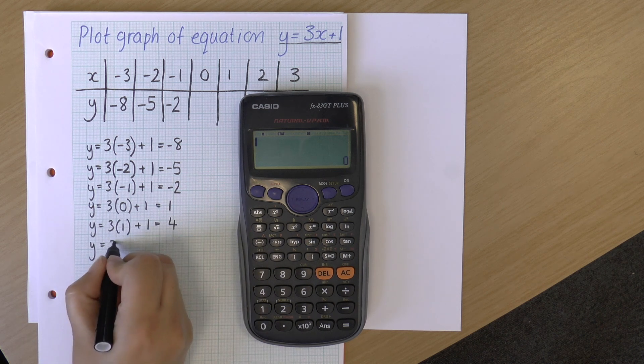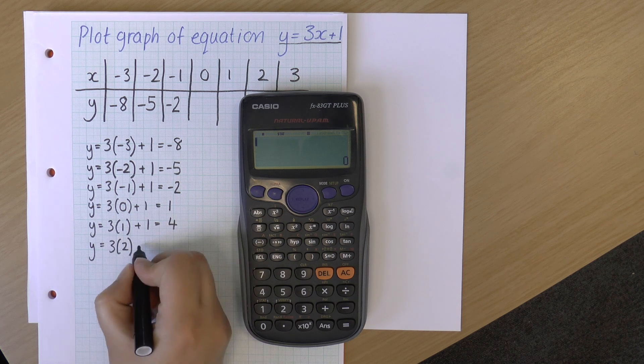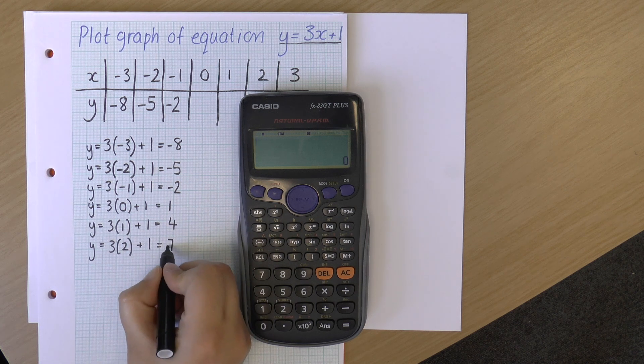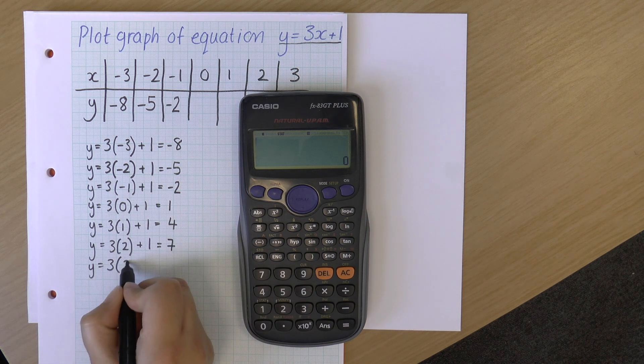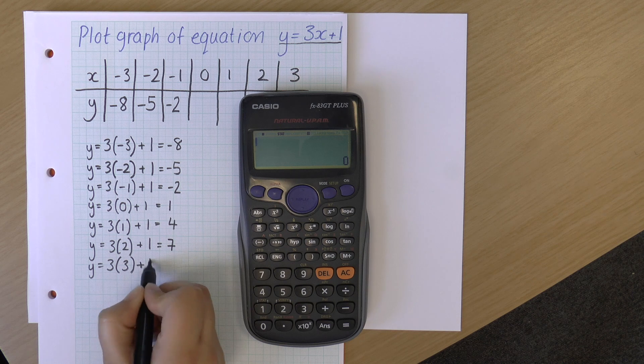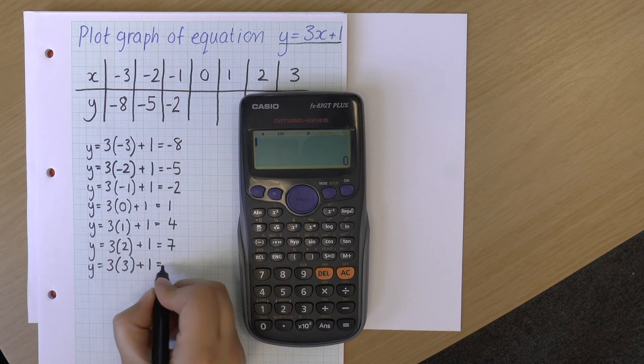y equals 3 times 2, which is 6, plus 1 equals 7. And y equals 3 times 3 plus 1. So that's 9 plus 1, which is 10.